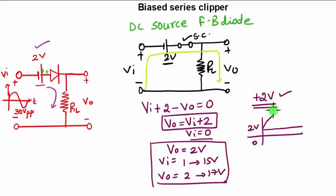So it will start from 2 volts, go till 15 volts, so total from 0 it will be 17 volts peak, and again it will come to 2.